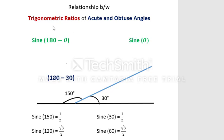Relationship between trigonometric ratios of acute and obtuse angles. Here we have a diagram where a black line is a straight line and the upper part is divided between two angles. The angle on the right-hand side is the acute angle and the second one is the obtuse angle. This 150 degrees is obtained by subtracting the acute angle from 180 degrees — 180 minus 30 is 150.